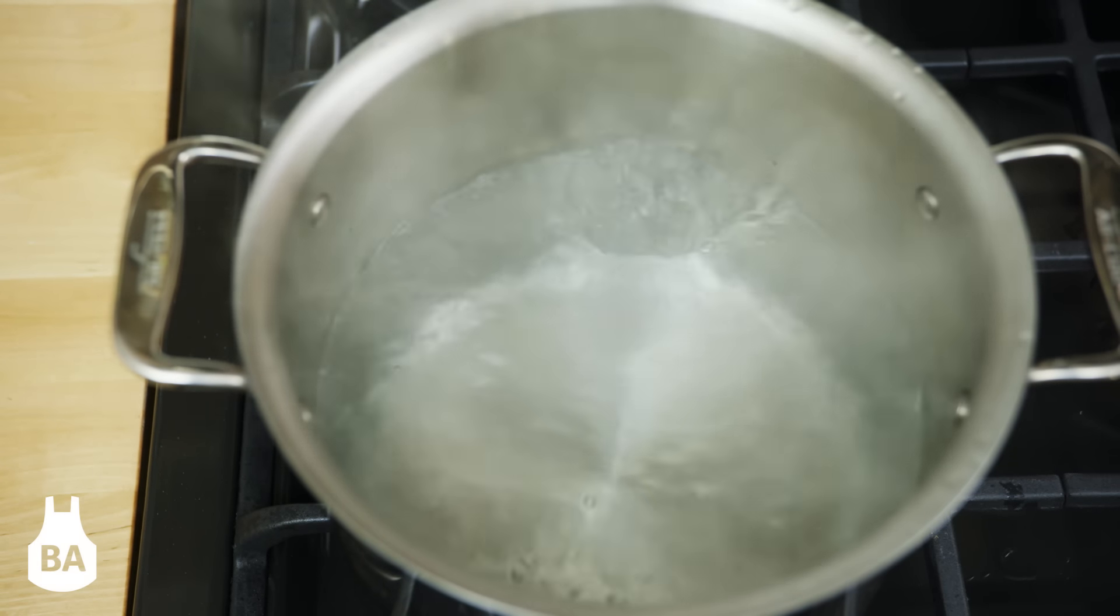Blanching green vegetables is a common technique that we use in the kitchen. The first thing we need is a large pot of boiling water.